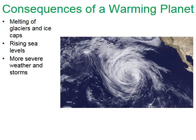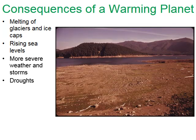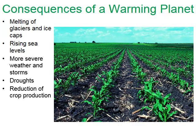Another consequence of a warming planet is more severe weather storms. A warmer planet increases the rate of water evaporation — what goes up must come down. Some areas receive more rainfall than normal, but other areas experience drought because water evaporates faster and blows away. One side effect of drought is a reduction of crop production, and California is a firsthand witness to this particular consequence.